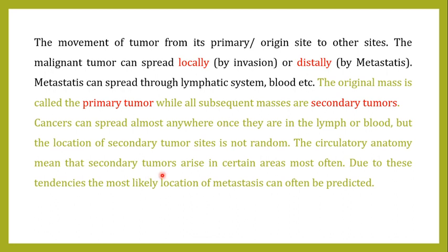To summarize these technical terms: the movement of a tumor from its primary origin site to other sites — if spread locally, it is called invasion; if spread distally to distant parts of the body, it is called metastasis. Both involve movement from the primary origin site. Metastasis can occur via the lymphatic system or the blood. The original mass is the primary tumor, and all subsequent masses in other parts of the body are called secondary tumors.